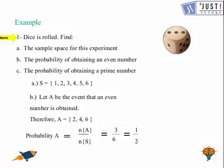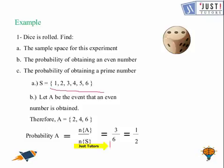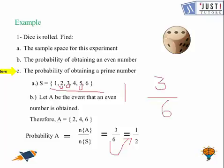Let us see this question. A dice is rolled and we need to find the sample space for this experiment. In a dice there are numbers 1 to 6, so that is the sample space. Then, the probability of obtaining an even number: in a dice the even numbers are 2, 4 and 6, so there are 3 even numbers. The number of events is 3 and number of outcomes is 6, so when you simplify you get 1 over 2. Now for part C, we need to find the probability of obtaining a prime number. In a dice the prime numbers are 2, 3 and 5 — there are 3 prime numbers and total outcomes are 6, so the probability is again 1 over 2. In this manner you can find the probability of many such questions.